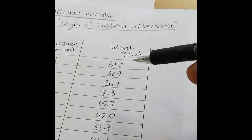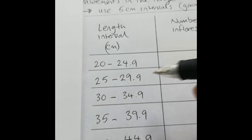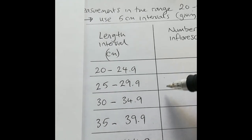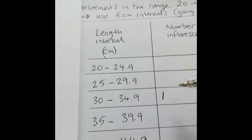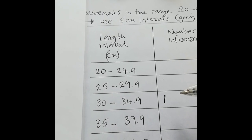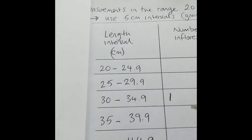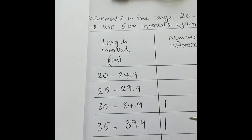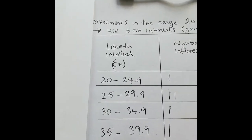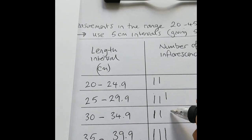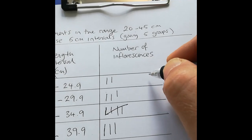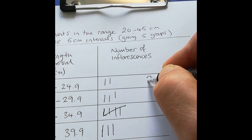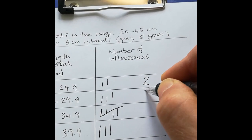Then all I do is look down my data — the first one is 31.2, so I go along and put a tally in the 30 to 34.9 box. The next one is 38.9, so I put a tally in the 35 to 39.9 box, and I work through all my data. My full data tally chart looks like this.